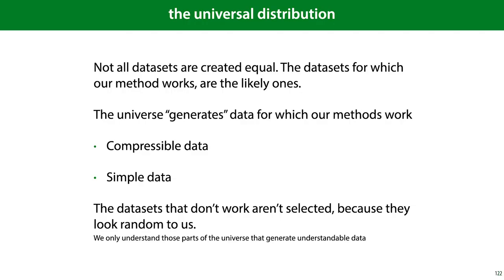One get-out clause to the NFL theorem is that there is a universal distribution governing the data-gathering process. This is a kind of meta-distribution over all datasets, so when we gather data, we first select a dataset from the universal distribution and are then given points from that particular dataset. The NFL theorem implicitly assumes that all datasets are equally likely, so if this is not the case, when we have a universal distribution, we can work out a universally best algorithm.